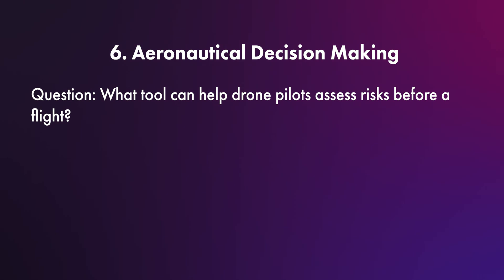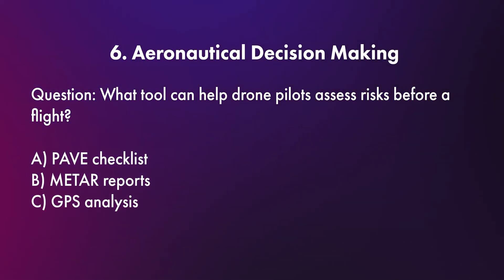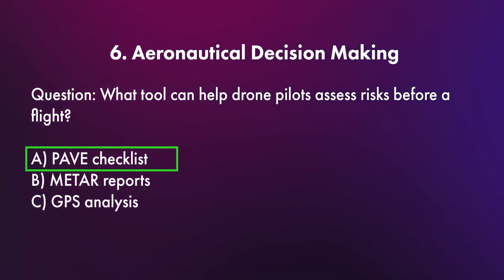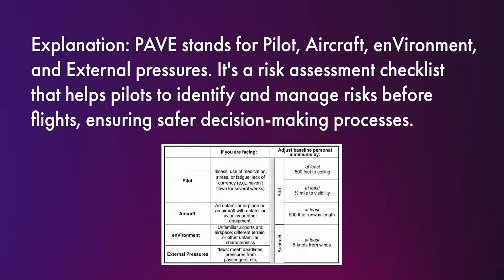Question number six has to do with aeronautical decision making. What tool can help drone pilots assess risks before a flight — A) a PAVE checklist, B) METAR reports, or C) GPS analysis? The correct answer is A, a PAVE checklist. PAVE stands for Pilot, Aircraft, Environment, and External Pressures. It's a risk assessment checklist that helps pilots identify and manage risks before flights.